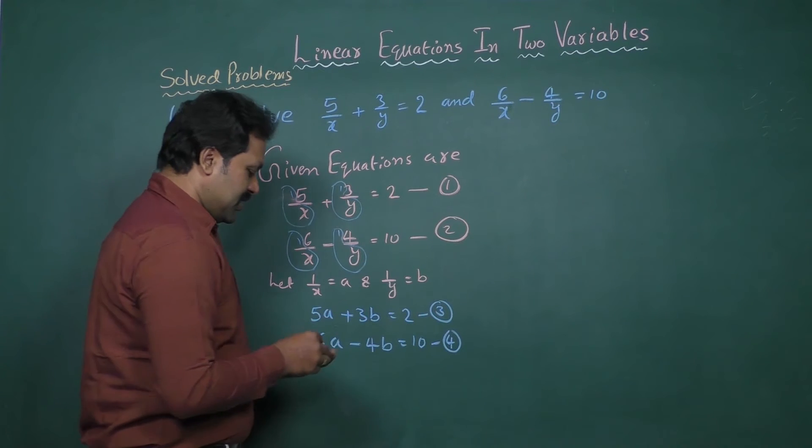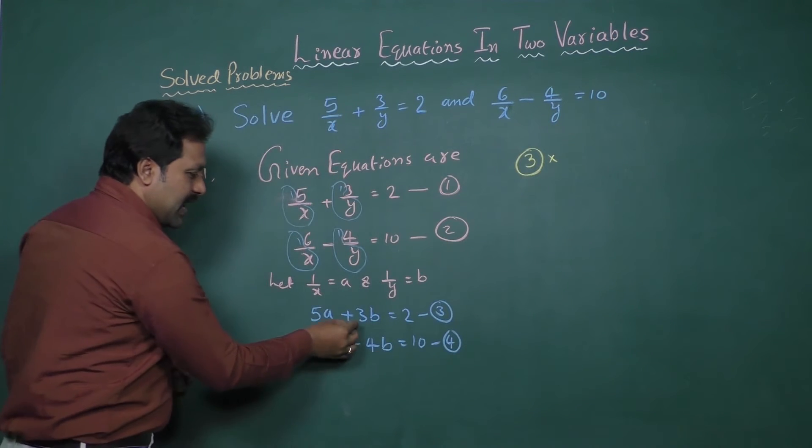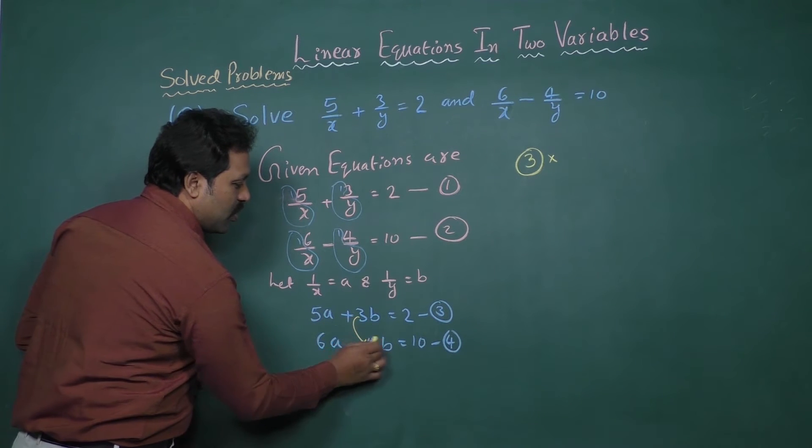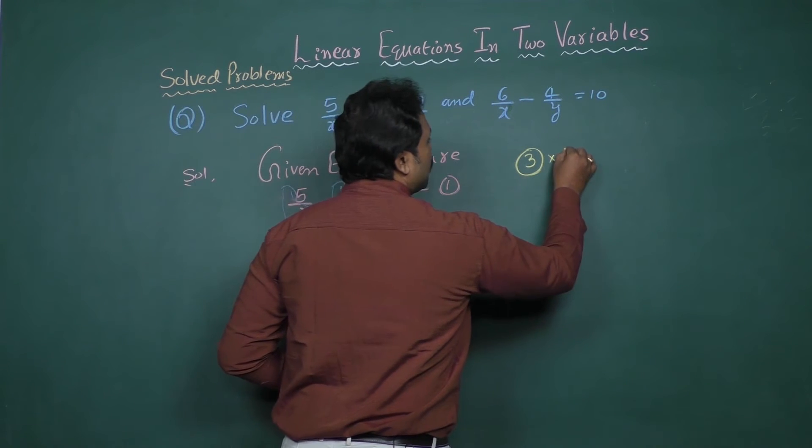take equation 3 multiplied by coefficient of b, 4, of equation 4. So, 3 into 4.